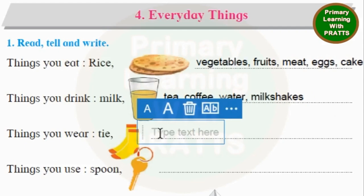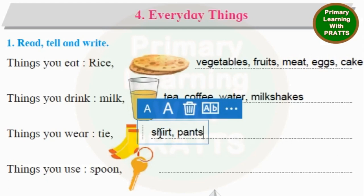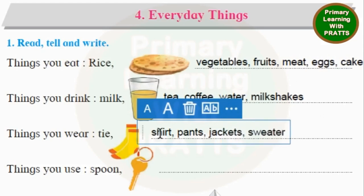More things we wear: Shirt, Pants. You must remember, Pants — whether it is one or two — is always Pants, because it has two legs in it. So it's always Pants whether you say one pants or two pants. Next we can write Jackets, Sweaters — these you can write singular or plural. And Uniform.